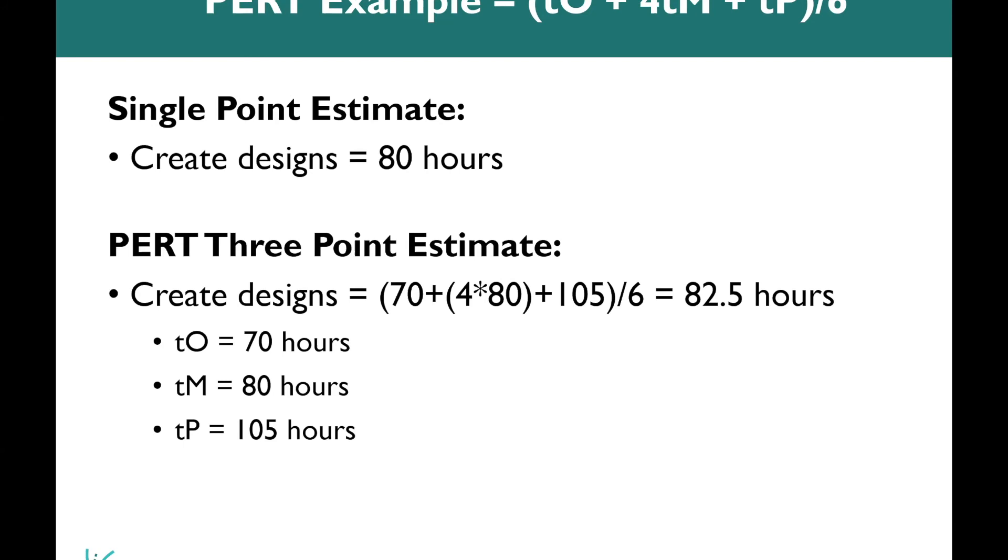So you can see comparing the PERT estimate, which is 82.5 hours to the single point estimate, which is 80 hours. It's a bit more accurate. And this is the main goal of using PERT, which is that three point estimation technique.